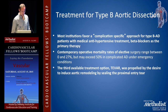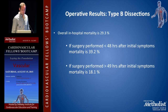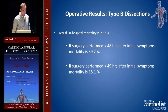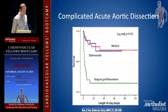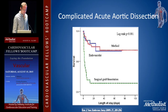TEVAR, the third available treatment option, is basically propelled by the desire to induce aortic remodeling by sealing the proximal entry tear. Overall in-hospital mortality for type B dissections is about 30%. If surgery is performed within less than 48 hours after initial symptom onset, mortality can be close to 40%, and after that the mortality rate actually goes down — though this is based on open surgery, not endovascular. IRAD data essentially compares the different managements of type B dissection, with medical management closely paralleling endovascular therapy, and surgical management showing much poorer survival.